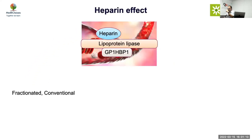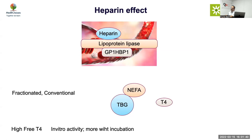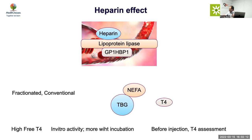The heparin effect is important: heparin activates lipoprotein lipase and hepatic lipase, releasing non-esterified fatty acids that displace T4 from TBG, causing falsely high FT4 while TSH remains normal. A sample taken after heparin injection and stored for six hours will show even higher FT4 because the process continues in vitro. Therefore, blood for thyroid function should ideally be collected before the heparin injection.